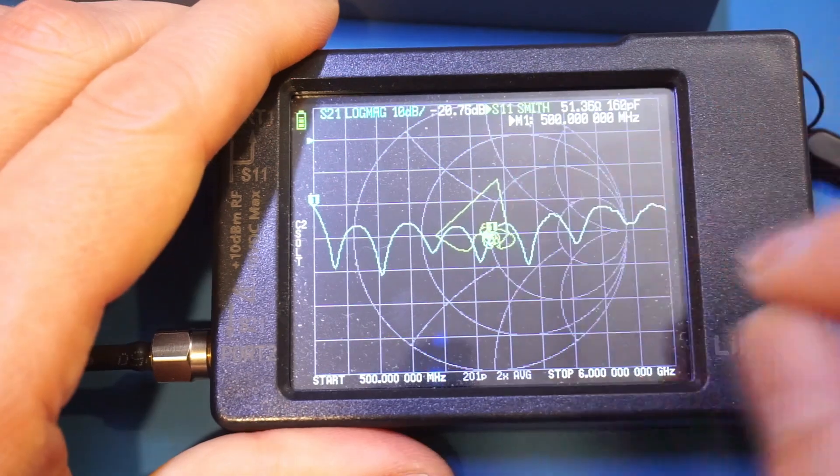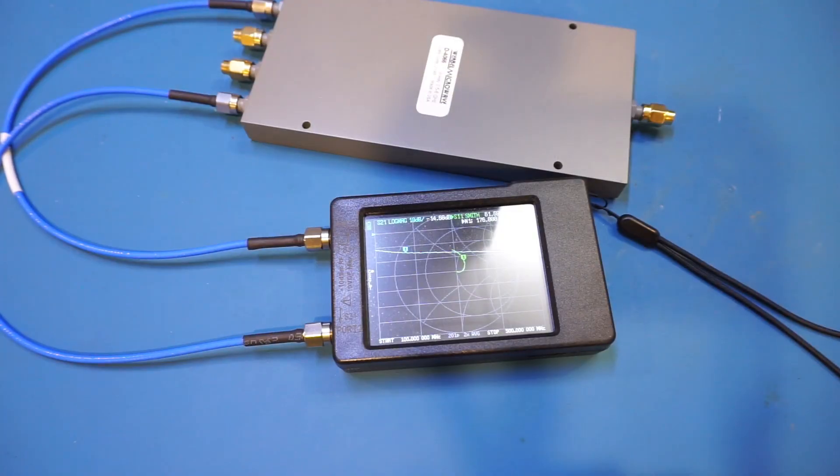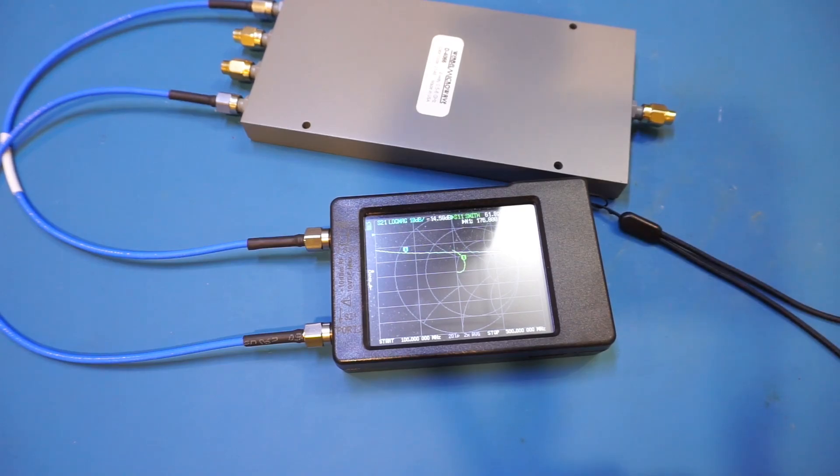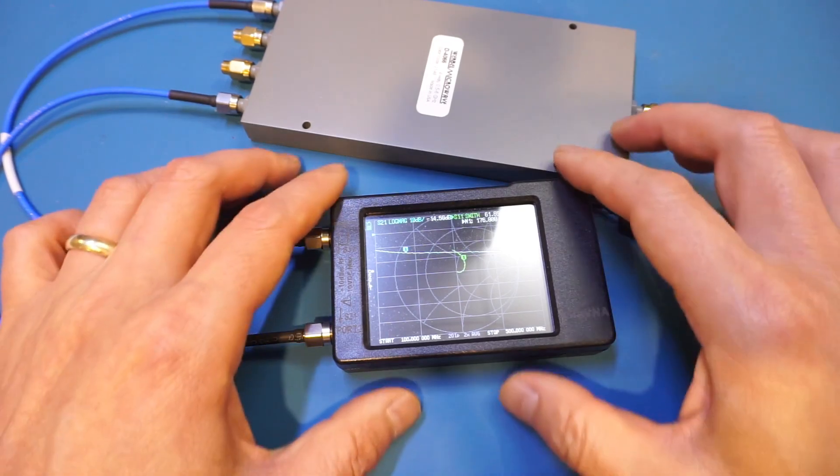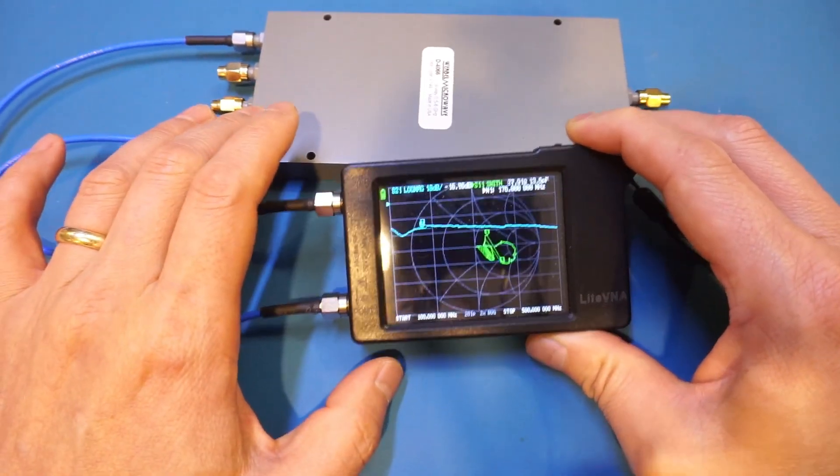Although the divider is specified with a frequency range between 500 megahertz and 6 gigahertz, it doesn't really mean that you cannot use it outside that frequency range. It just means that the performance such as port isolation and the impedance can no longer be guaranteed. And just for my curiosity I'm looking at the frequency currently between 100 megahertz and 500 megahertz. That's way outside of the spec and you can see here, let me just zoom in a little bit more, and actually it's very touchy again.